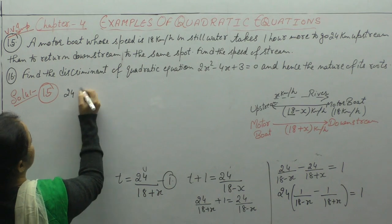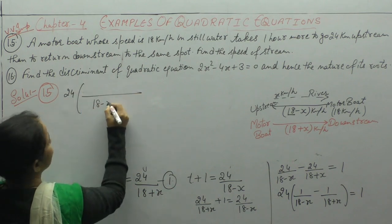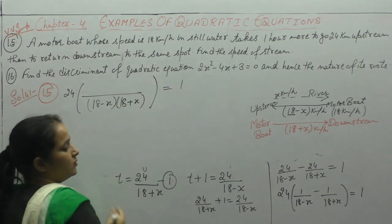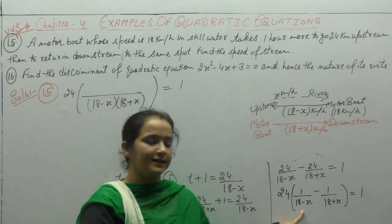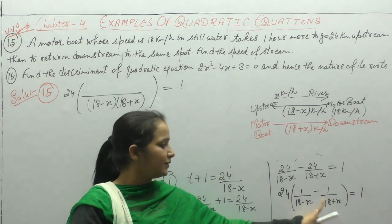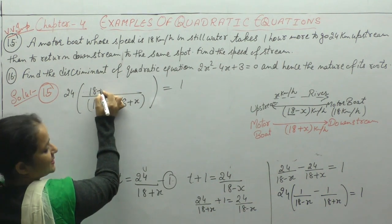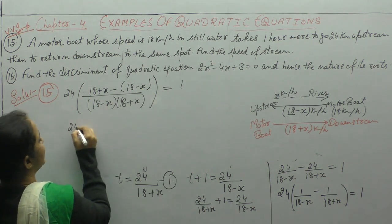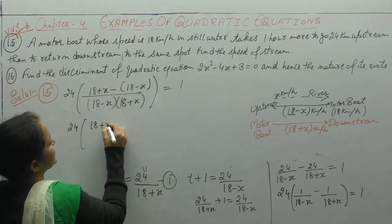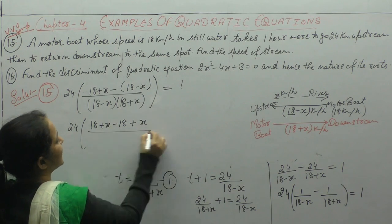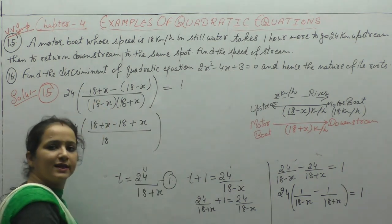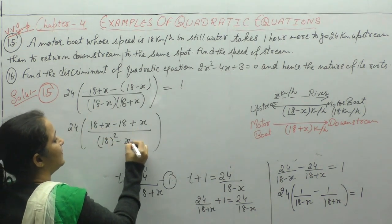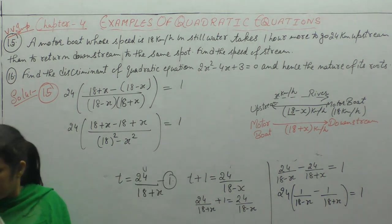Take the LCM. The denominator becomes (18 minus x) into (18 plus x). The numerator: (18 plus x) multiplied by 1, minus (18 minus x) multiplied by 1. Open the bracket: 18 plus x minus 18 plus x. In the denominator we use the identity (A minus B)(A plus B) equals A squared minus B squared, so denominator is 18 squared minus x squared, which is 324 minus x squared.